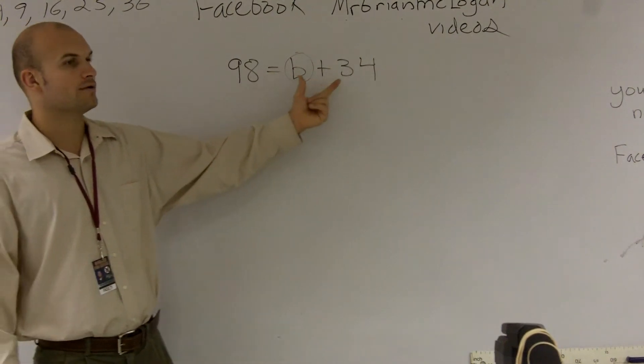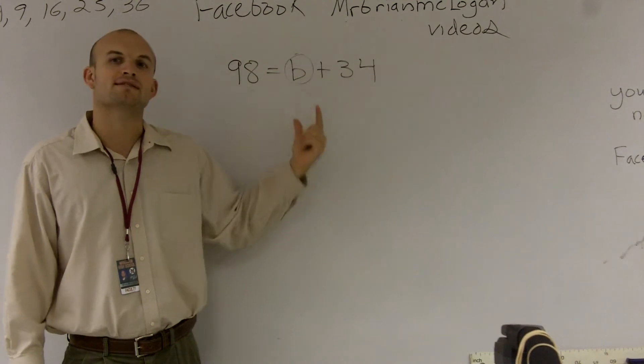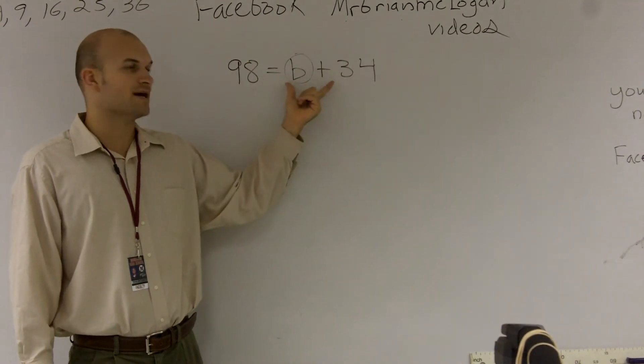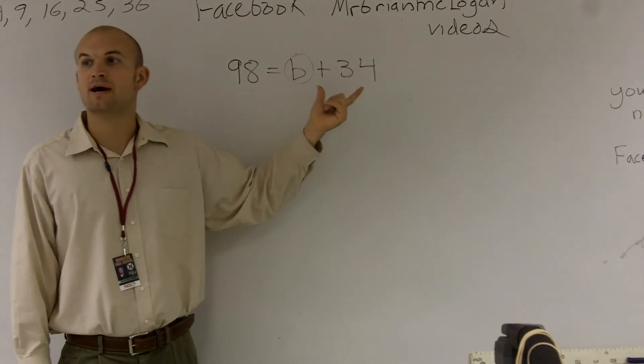And then also it kind of says, well, to undo, to get the b by itself, we have to undo what's happening to the b. So you can see right on the right side of this equation sign, what's happening to the b. It's being added by 34.